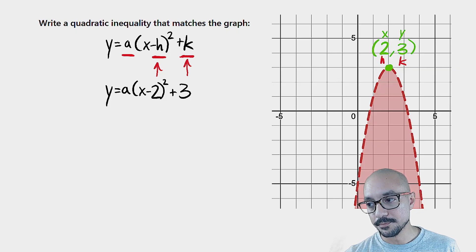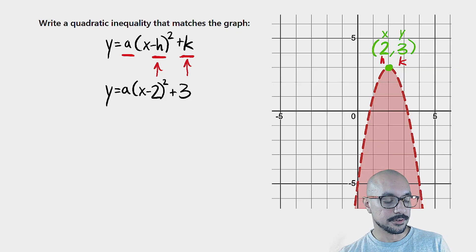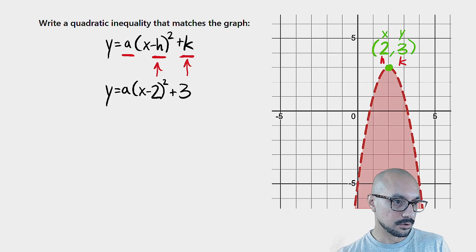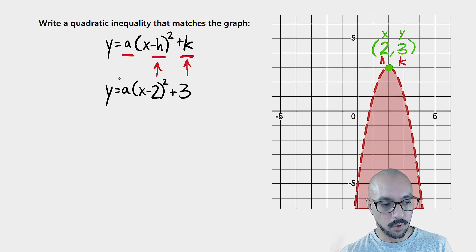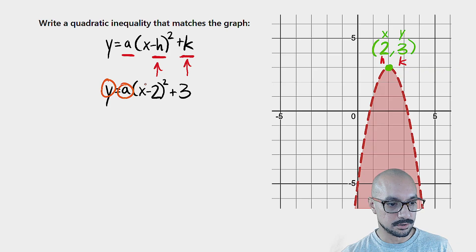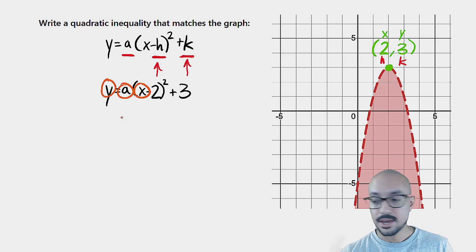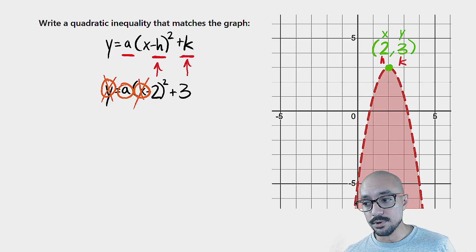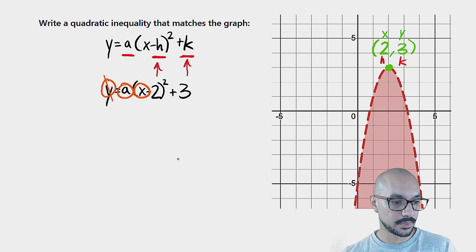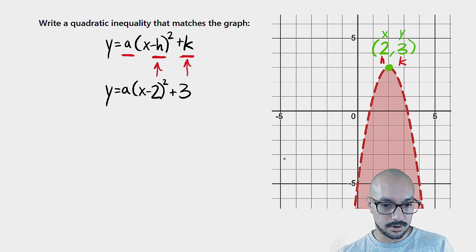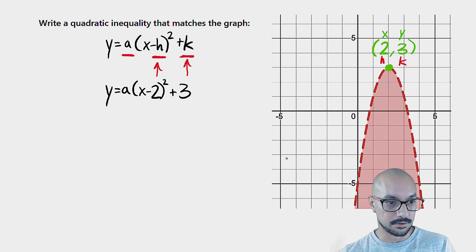From here, we still need the a value. So to figure out the a value, if you take a look at our equation here, our equation has three variables left inside of it. One of those three variables is a parameter. But in total, I have one, two, three variables. If I can eliminate two of those variables, then a will be the only unknown left and I could solve for that unknown.